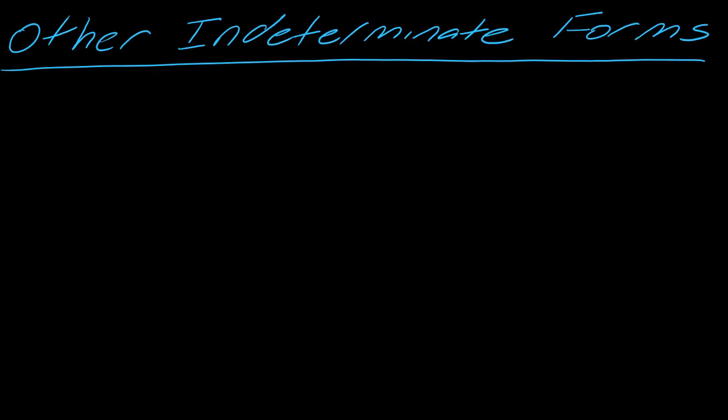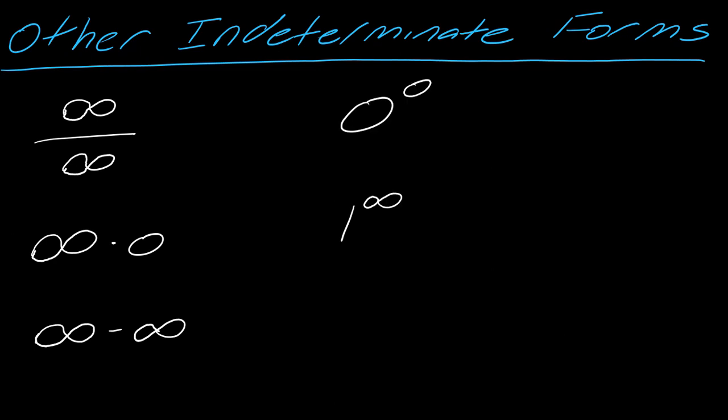Now, there are other indeterminate forms. For instance, you can have infinity over infinity, infinity times 0 would be an indeterminate form, infinity minus infinity would be an indeterminate form, 0 to the 0 is in the list and then also 1 to the infinity. So we have this whole list of indeterminate forms.